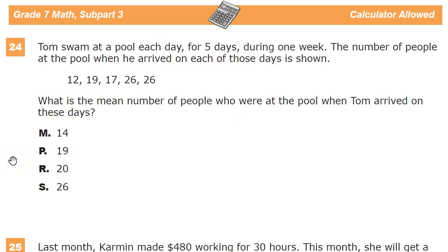This is a grade 7 math practice test for TN Ready. Question on this version, number 24. Tom swam at a pool each day for five days during one week. The number of people at the pool when he arrived on each of these days is shown: 12, 19, 17, 26, and 26. What is the mean number of people who were at the pool when Tom arrived on these days?